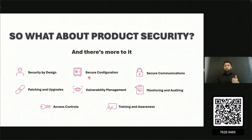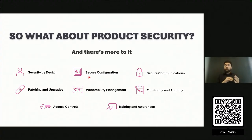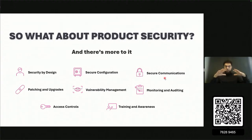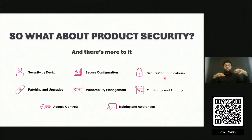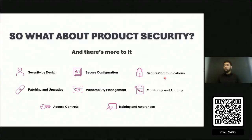Some flagship elements of product security: first, secure design practices — right from the design and architecture phase we verify architecture from a security point of view. Then, secure configuration — ensuring default factory settings are also secure, so every device has a secure default configuration. Secure communication is also critical: not only is communication between components within a product secure, but when integrating many products into a larger system, that communication is secure too, with no possibility of man-in-the-middle attacks.